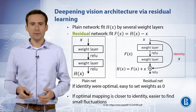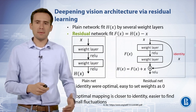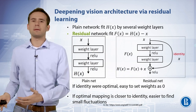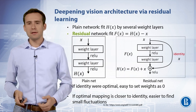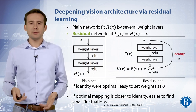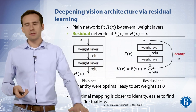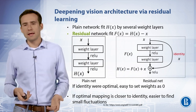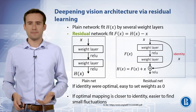The hypothesis is that it is easier to optimize the residual mapping than to optimize the original mapping. To this extreme, if an identity mapping were optimal, it would be easier to push the residual to zero than to fit an identity mapping by a stack of nonlinear layers.